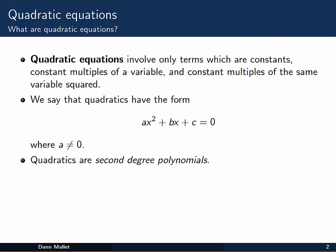Essentially, a quadratic equation is one that's formed out of a quadratic expression. It's an equation which involves only terms which are constants, constant multiples of a variable, and constant multiples of the same variable squared, and combinations of those that are added or subtracted from each other.